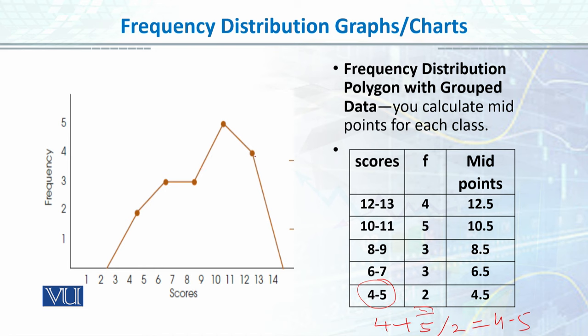So this is grouped frequency polygon. And we also know that in every class interval, or in every group, we have the amount of frequency.